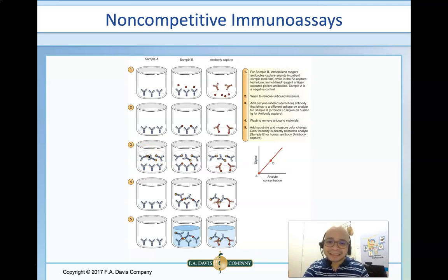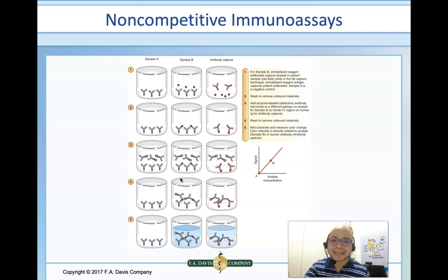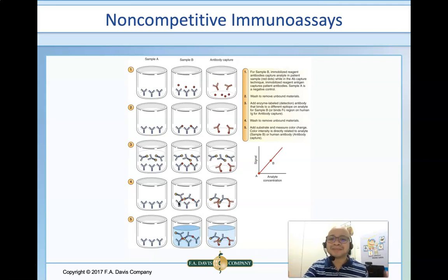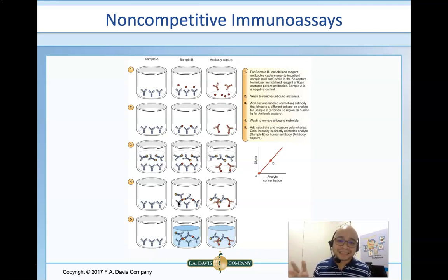The FC portion of the second antibody has been labeled — in this case, let's say it is an enzyme. After adding the enzyme-labeled antibody, it binds to a different epitope of the analyte in Sample B. In step four, you can see the red dot representing the patient's antigen, with the FAB portion of the second antibody binding to it. We then wash unbound materials and add the substrate to produce a color reaction. The more intense the color, the higher the concentration of the patient's antigen.